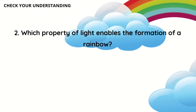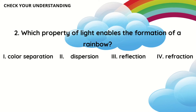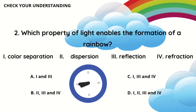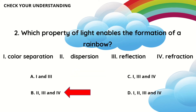Question two: which property of light enables the formation of a rainbow? One is color separation, two is dispersion, three is reflection, and four is refraction. A — one and three. B — two, three, and four. C — one, three, and four. D — one, two, three, and four. The answer is letter B: dispersion, reflection, and refraction.